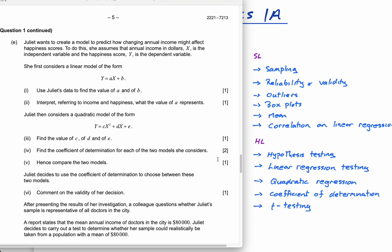Now here it says Juliet decides to use the coefficient of determination to choose between these two models. Comment on the validity of her decision. That's something that I always talk about: just because your correlation coefficient is bigger or closer to one, that doesn't necessarily mean it's a better model. So you've got to be careful. This is not a good decision. It's not valid, what she did. Because the quadratic will always have a better or higher correlation coefficient or coefficient of determination closer to one than the linear model.